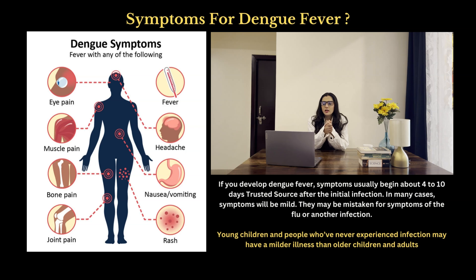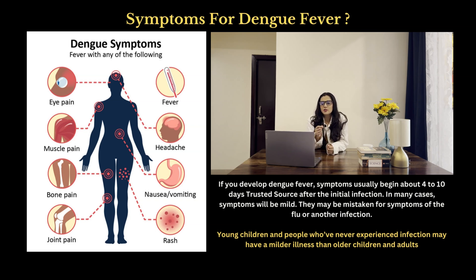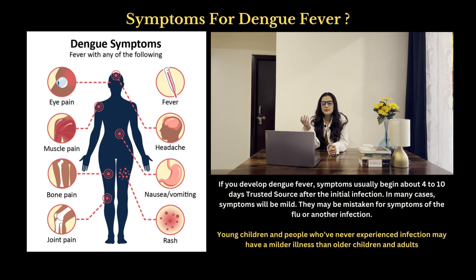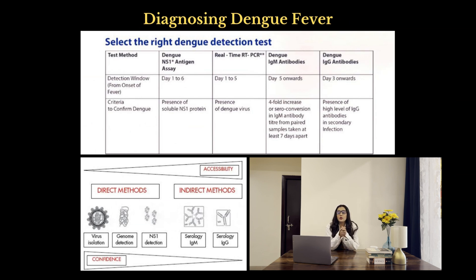If you develop dengue fever, symptoms usually begin about four to ten days after the initial infection. In many cases, symptoms will be mild and may be mistaken for flu or another infection. Young children and people who have never experienced infection may have a milder illness than older children and adults. Common symptoms generally last for two to seven days and can include sudden high fever, severe headache, swollen lymph glands, severe joint and muscle pains, and a skin rash appearing between two to five days after the initial fever.